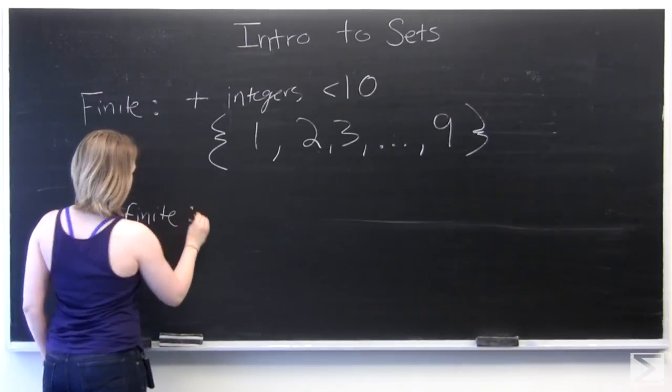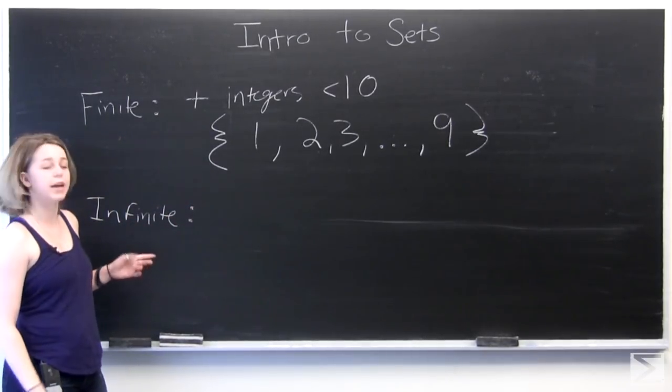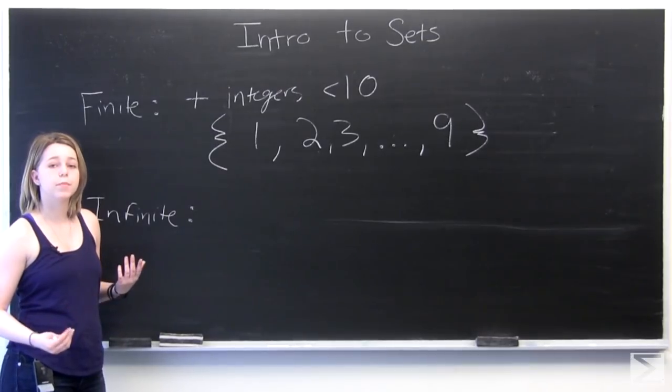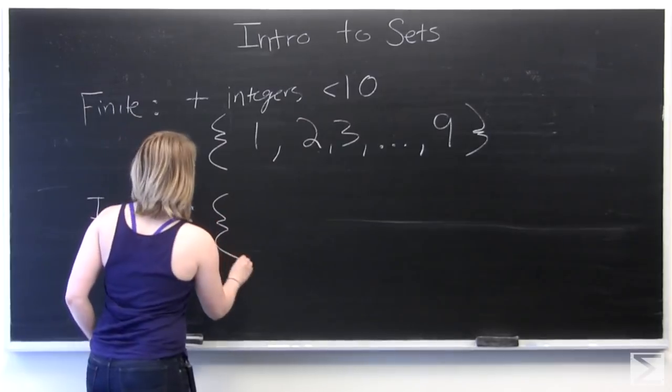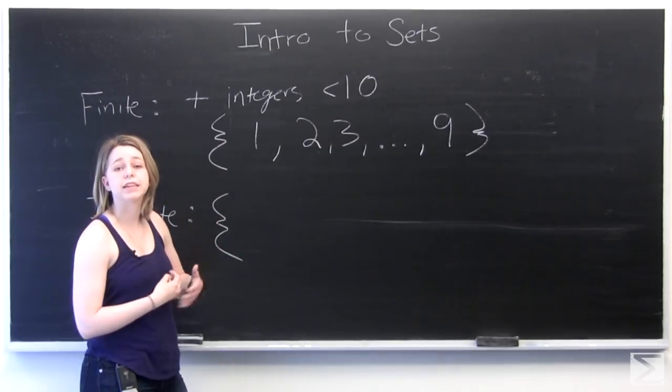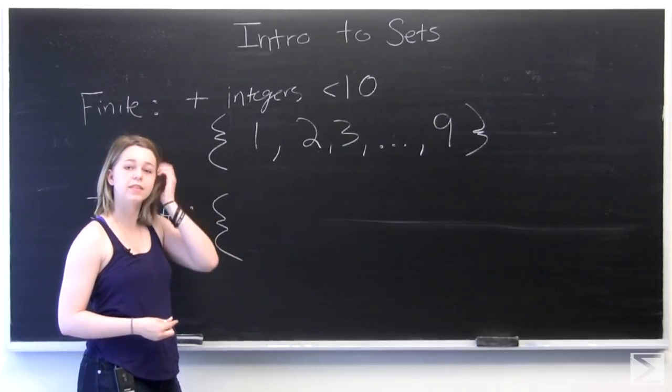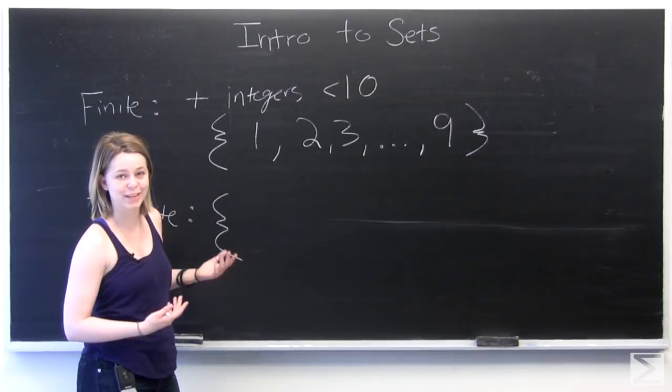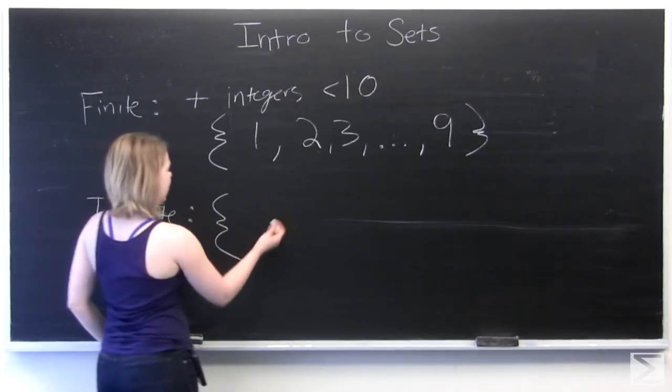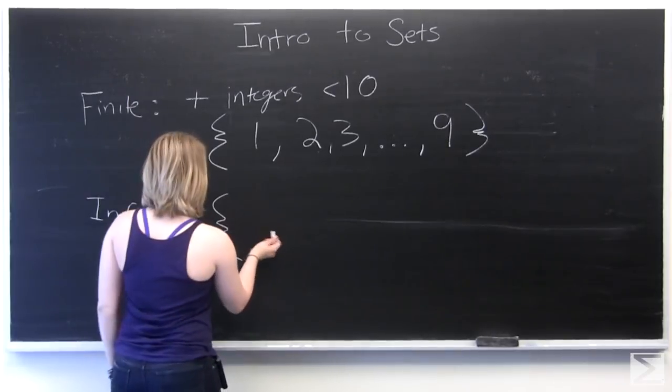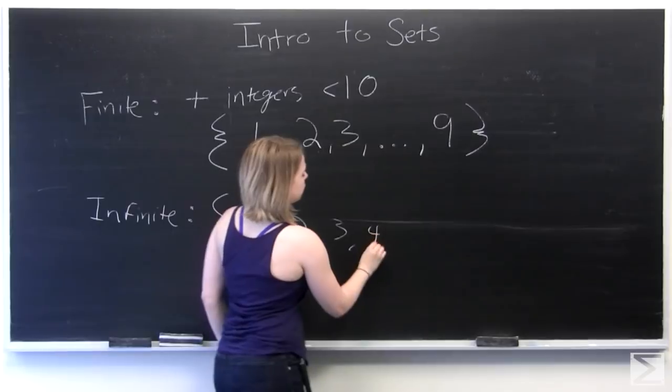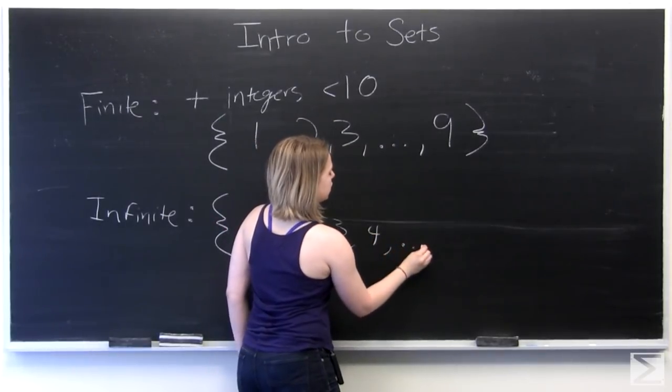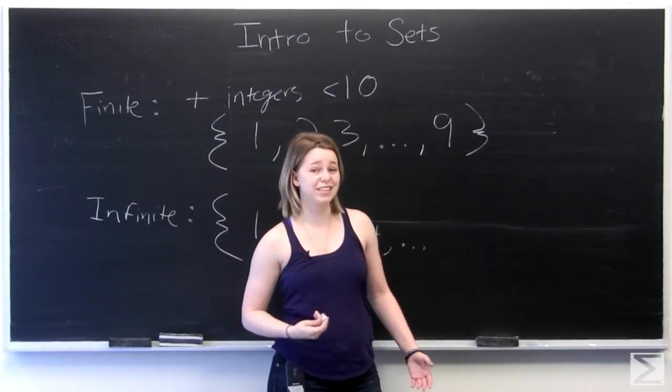And there are also infinite sets. And so an example of an infinite set would be the set of natural numbers. So a natural number, like we explained in our number classification video in the algebra series, is any number above 0 that is an integer. So we've got 1, 2, 3, 4, but there's no way of knowing where this list ends.